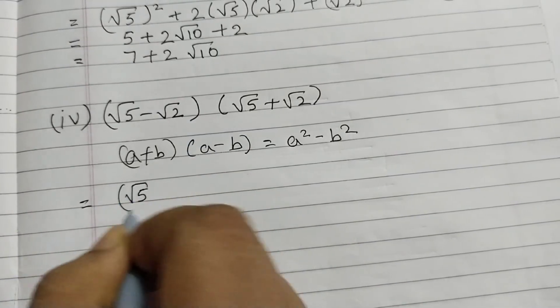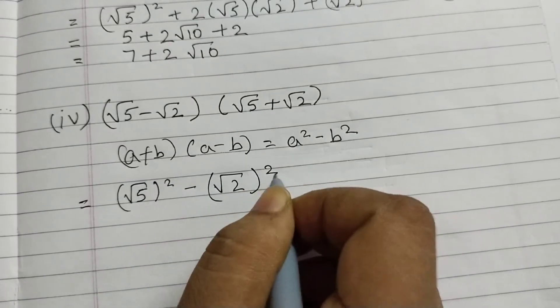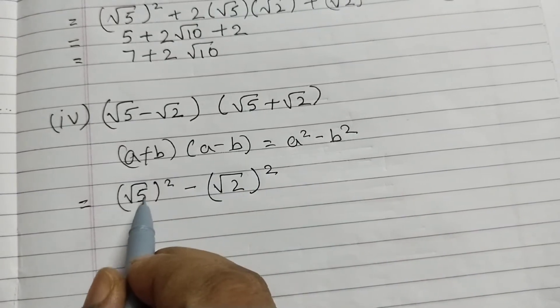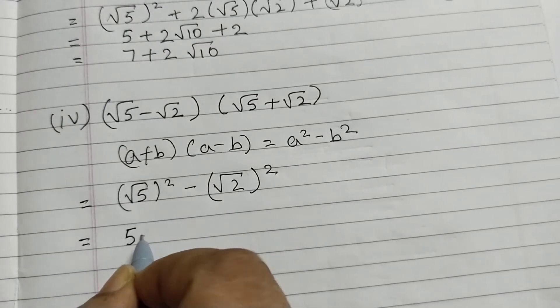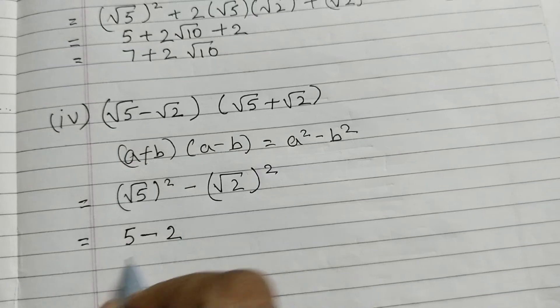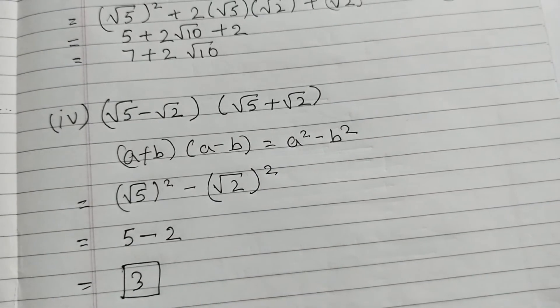a is root 5, b is root 2. So root 5 squared minus root 2 squared and we know when we are squaring a root, this becomes a whole number. So this will be 5 minus 2, that equals to 3 and that is the answer.